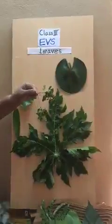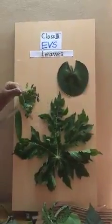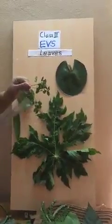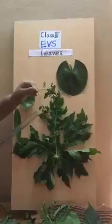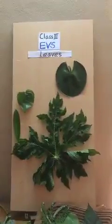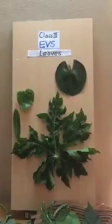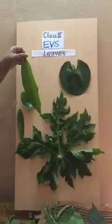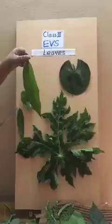Now let's see the different sizes. Some leaves are small in size — they are the tulsi leaves. You can find out and write down the leaves which are small in size. Next is a medium size leaf — this is not very small or too big. It is a mango leaf.